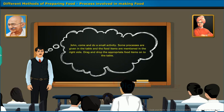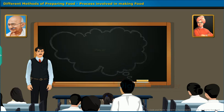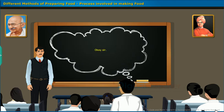John, come and do a small activity. Some processes are given in the table and the food items are mentioned on the right side. Drag and drop the appropriate food items onto the table.